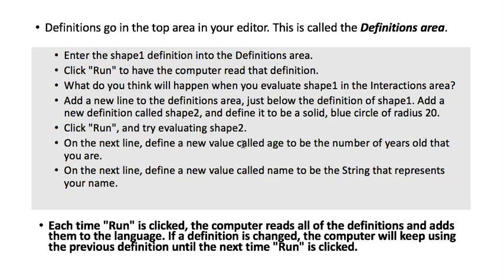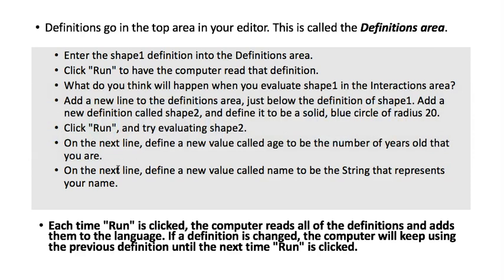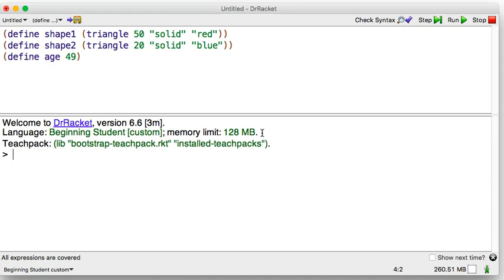On the next line, define a new value called age to be the number of years old that you are. Define age 49. You know, a number is just an expression for itself, so that should be okay.